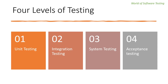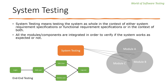So what is system testing? System testing means testing the system as a whole, in the context of either the system requirement specifications or the functional requirement specifications, or both. To do system testing, we need to test the complete system as a whole — all the modules or components are integrated in order to verify if the system works as expected.